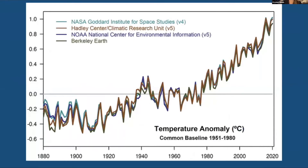NASA data shows average global temperatures have risen about 1.4°F (0.8°C) over the past 100 years. The IPCC reports that global warming is likely to reach 1.5°C between 2025 and 2030 at the current rate. Allowing temperatures to rise beyond 1.5°C will have devastating consequences: loss of natural habitats, rising sea levels, melting ice caps, spreading deserts, and catastrophic storms.